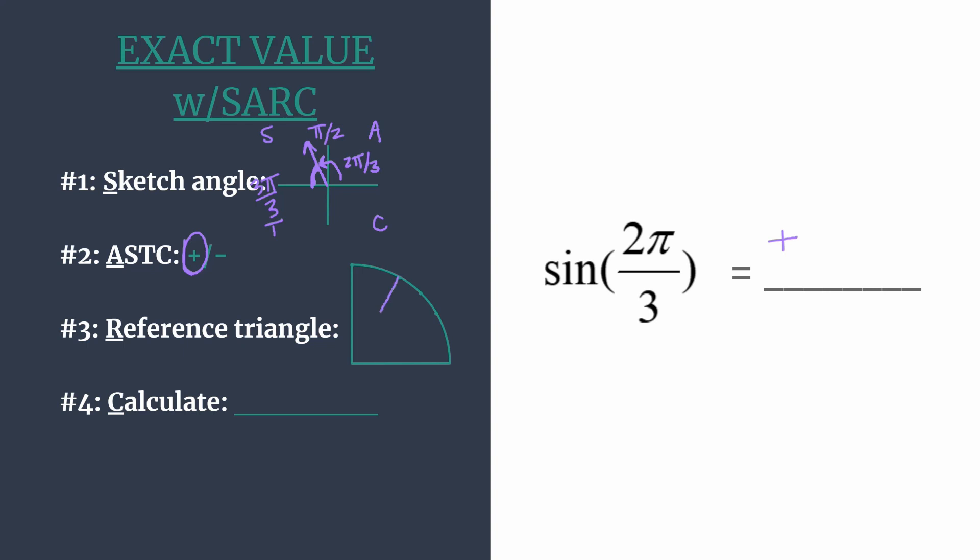So π over 3 and 60 are the same. So this is going to be our special right triangle. It's the 60 degree central angle. So it's a 60, 30, 90 triangle.